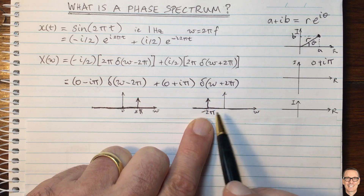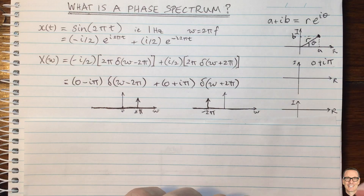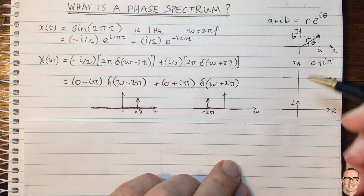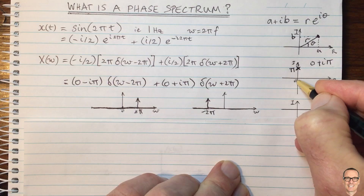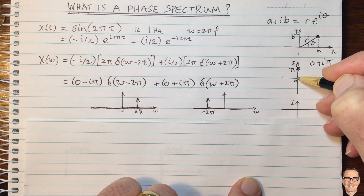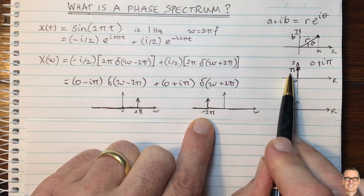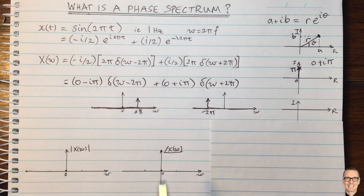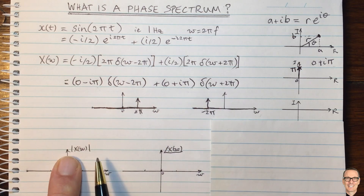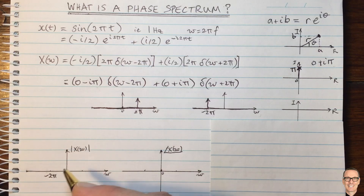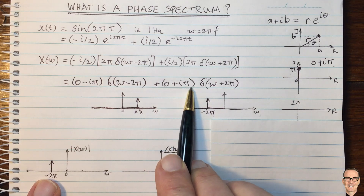At omega equals minus 2 pi, this corresponds to the complex number 0 plus i pi. On the complex plane that point has a distance from the origin of pi. So the magnitude of this complex number is pi. On our magnitude spectrum, at minus 2 pi we're going to have a delta function where the area of that delta function equals pi — the magnitude of this complex number.